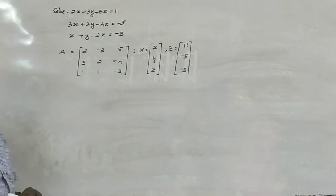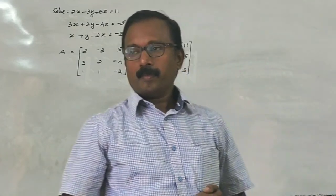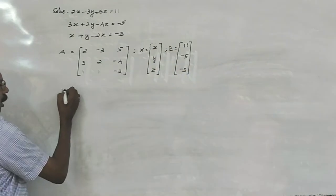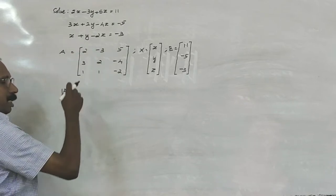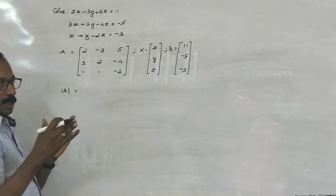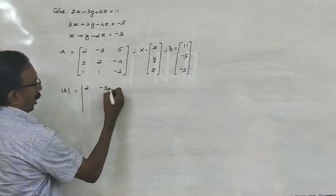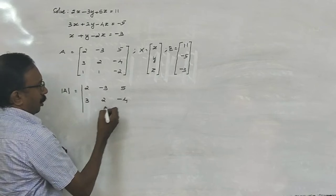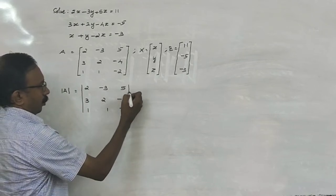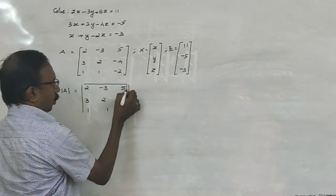First of all, we find the inverse of A. Here the determinant of A is equal to: The matrix can be converted into the determinant by changing this bracket. 2, minus 3, 5; 3, 2, minus 4; 1, 1, minus 2.